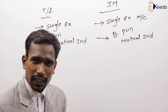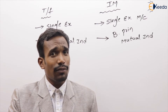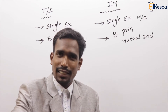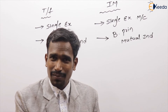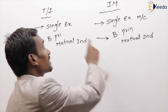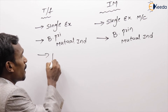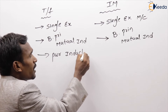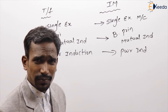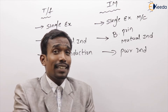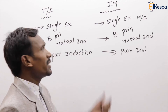Both transformer and induction machines are single excited machines. Generally, DC machines and synchronous machines are double excited. In double excited machines, power conduction takes place, whereas in single excited machines, power induction takes place — power transfer is due to induction in both transformer and induction machine.